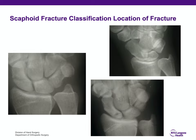One of the fracture factors is the location of the fracture. The scaphoid tubercle fracture is much more innocuous than the proximal pole fracture. The classification of location is generally: distal third or tubercle fracture, scaphoid waist fracture, or scaphoid proximal pole fracture.